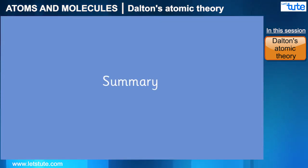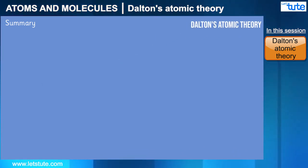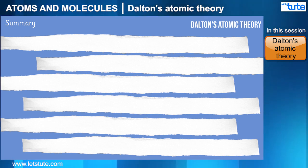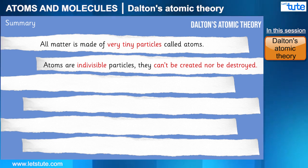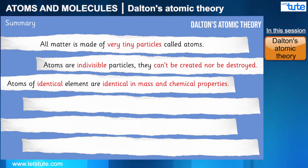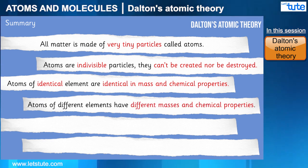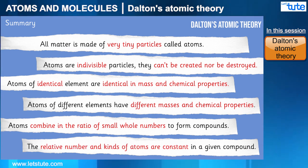To conclude the video, we learned about Dalton's atomic theory. Here are the key points: atoms are very tiny and indivisible; they can't be created nor be destroyed. Same elements have the same mass and chemical property, while different elements have different mass and chemical property. Atoms combine in a ratio of whole numbers, and the relative number and kind of atoms are constant in a compound.